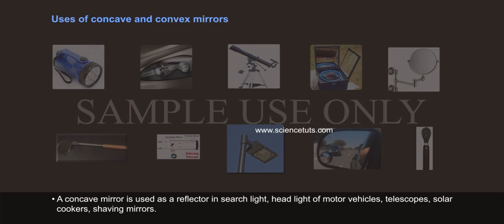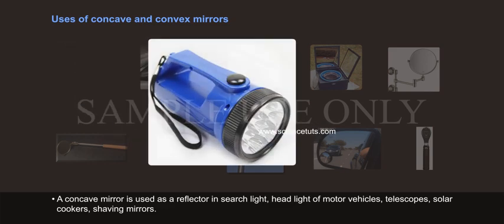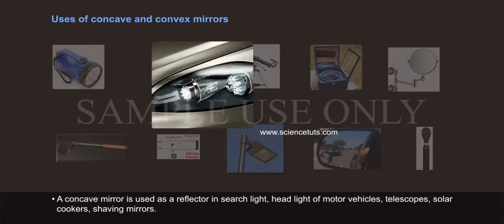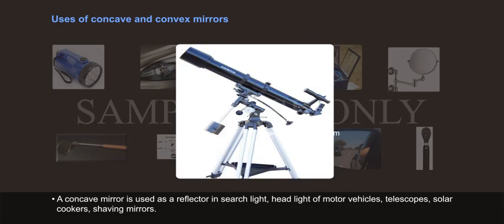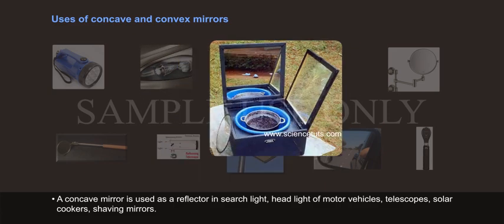Uses of concave and convex mirrors. A concave mirror is used as a reflector in searchlight, headlight of motor vehicles, telescopes, solar cookers, and shaving mirrors.